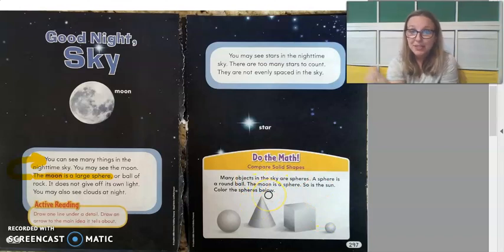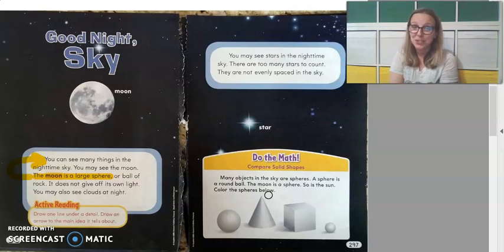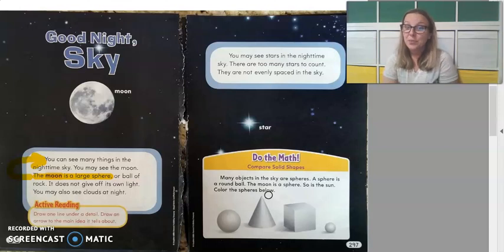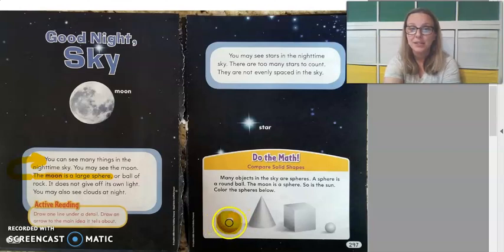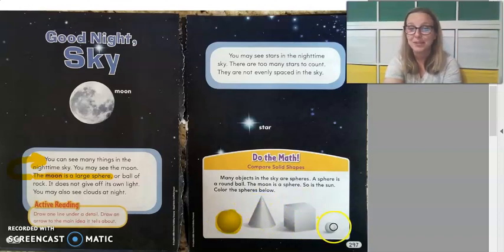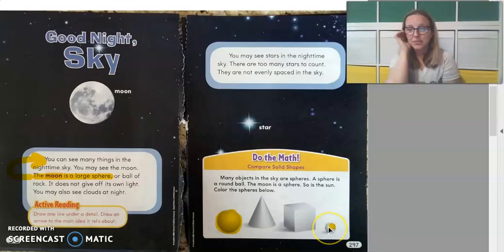Down here it says 'Do the Math: Compare Solid Shapes.' We just learned all about solid shapes in math. 'Many objects in the sky are spheres. A sphere is a round ball. The moon is a sphere — so is the Sun. Color the spheres below.' So I've got a sphere here to color — that's one ball. This is a cone, so I'm not going to color that. This is a cube, so not that either. And here's a smaller sphere. Go ahead and color both of those spheres.